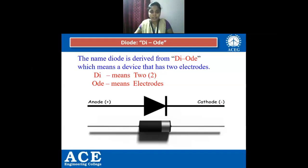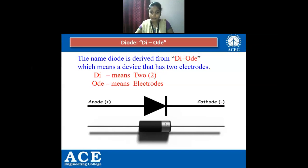Here we can see the circuit symbol of a PN junction diode where anode and cathode are mentioned. The second diagram shows the practical PN junction diode we see in laboratories. To identify anode and cathode on the practical diode, we look for a silver line coated on the diode. This silver line terminal indicates the cathode, and the other terminal is the anode.